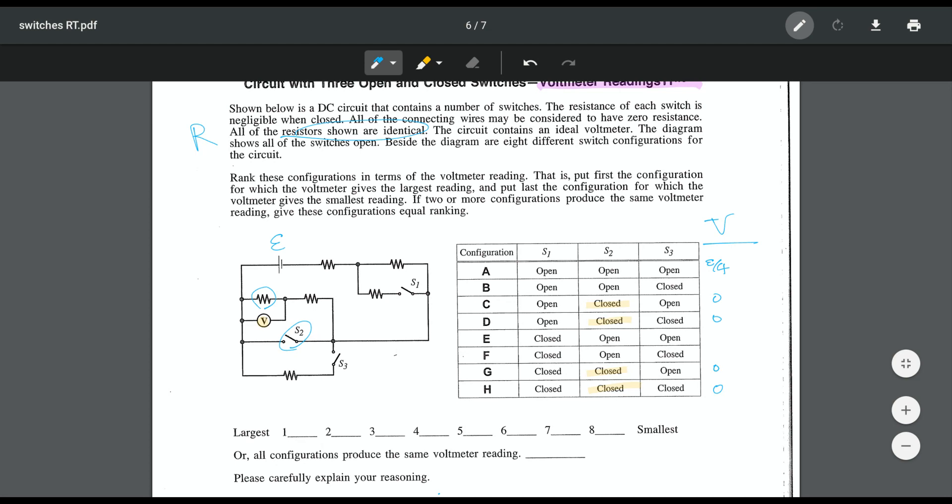So the case I want to pause on here is case B. In case B, we have switches 1 and 2 open and switch 3 is now closed. So now we have switch 3 closed, and that makes our circuit a little bit more complex. Switch 1 is open, so the resistor in series with switch 1 is not dissipating. Switch 2 remains open as well.